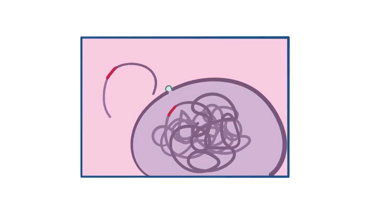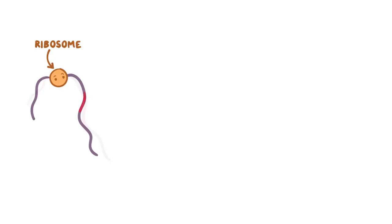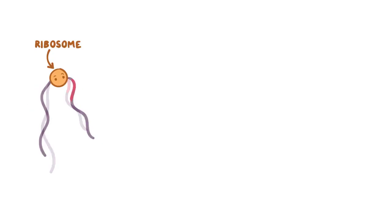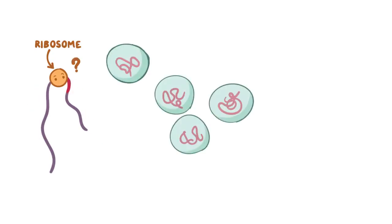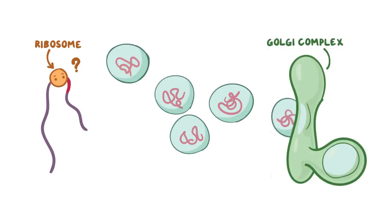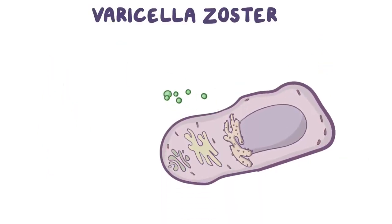The viral genes are transcribed into RNA and go to the ribosome, where they are translated into capsid proteins. The capsid and viral DNA fuse together, go through the Golgi complex — a cell organelle in charge of packing proteins — to get their lipid membrane, and finally, the newly formed viruses leave the cell, leaving behind a dead cell.